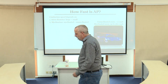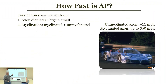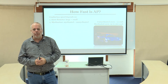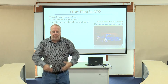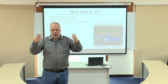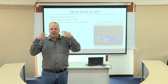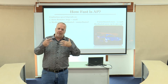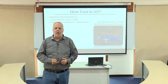Speed is critical. What regulates it? One, the axon diameter, and two, whether it's myelinated or not. An unmyelinated, small-diameter axon can propagate an action potential at 10 or 11 miles per hour — a little faster than you walk. A myelinated, large-diameter axon can propagate an action potential up to 560 miles per hour — that's twice the speed of a professional race car. Everything your brain controls, whether movement or the processing of sensory information, benefits from faster information flow.